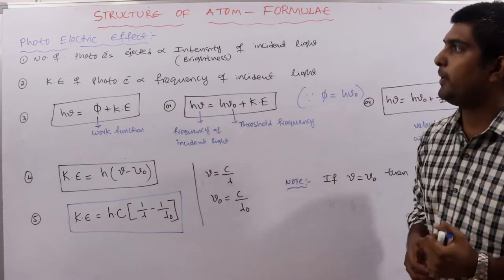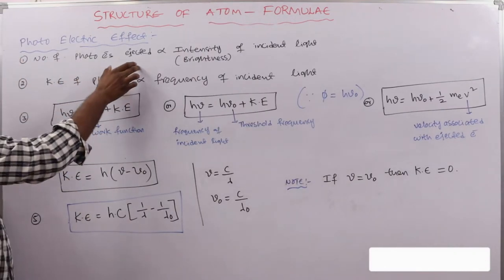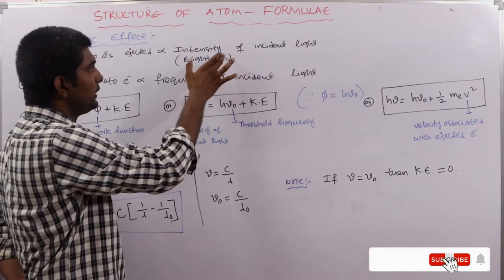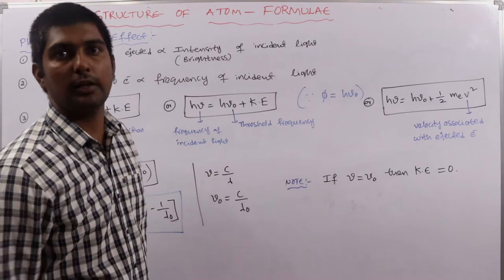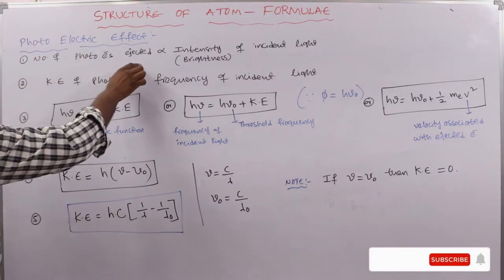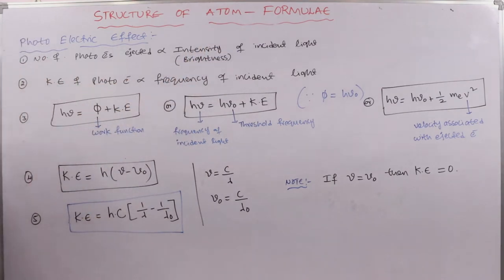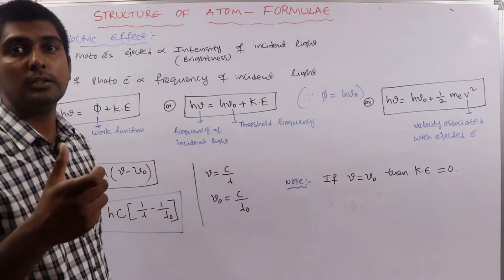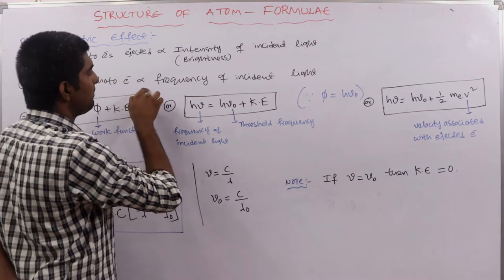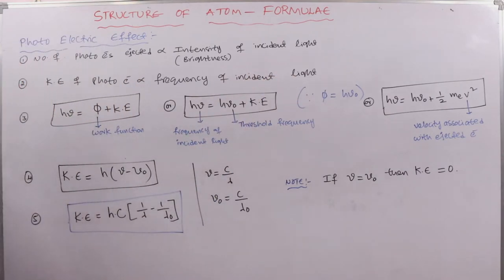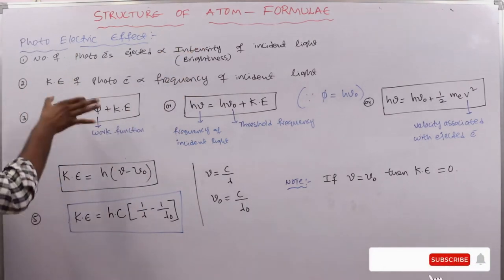Two key points in the photoelectric effect: the number of photoelectrons ejected is directly proportional to the intensity of the incident light, and the kinetic energy of the photoelectrons is directly proportional to the frequency of the incident light.